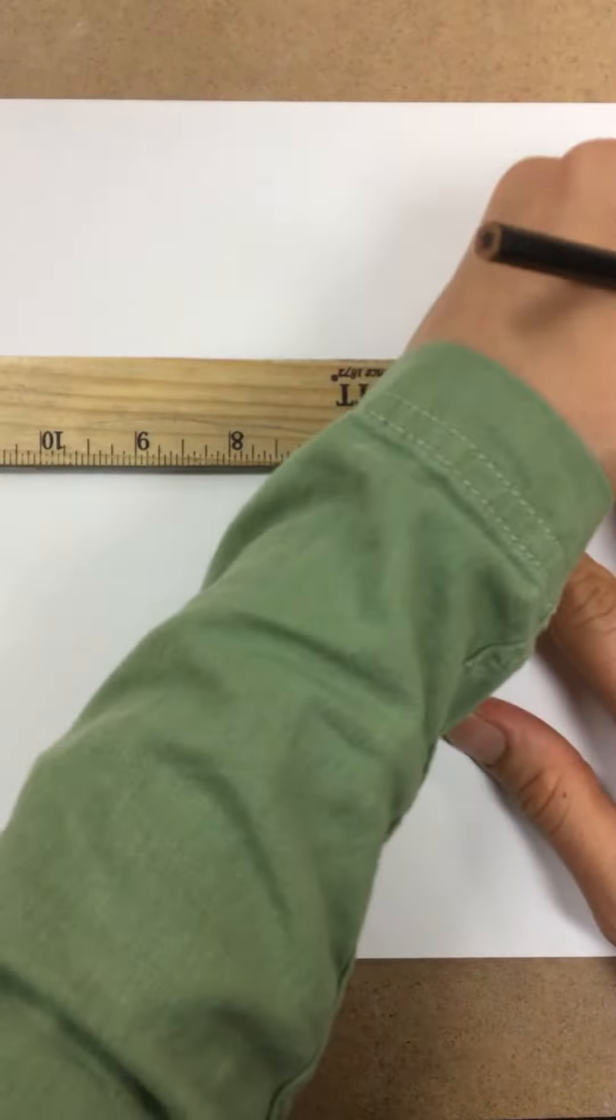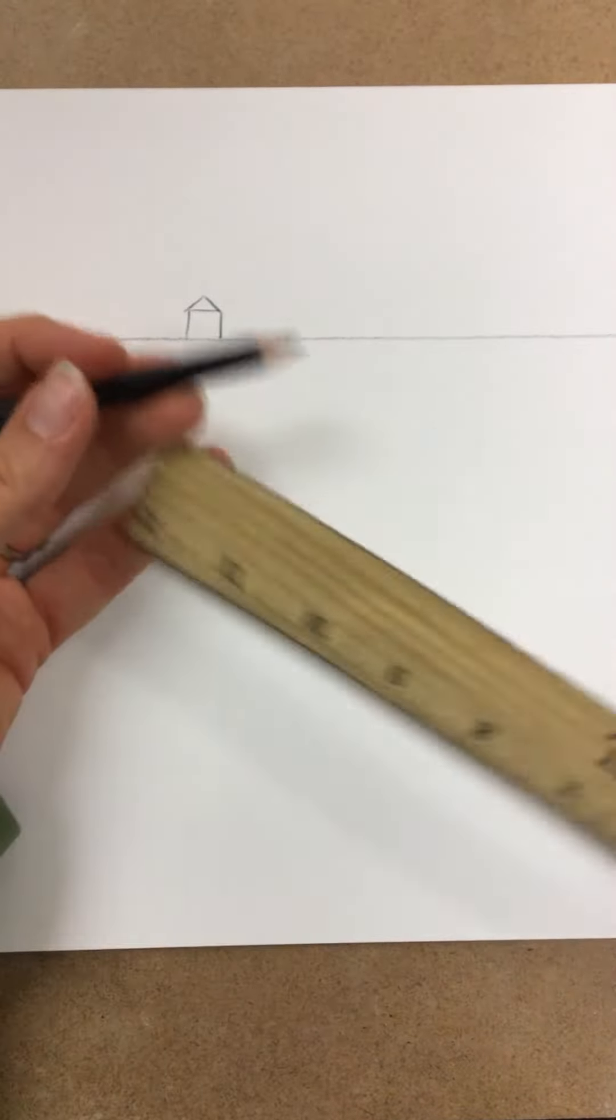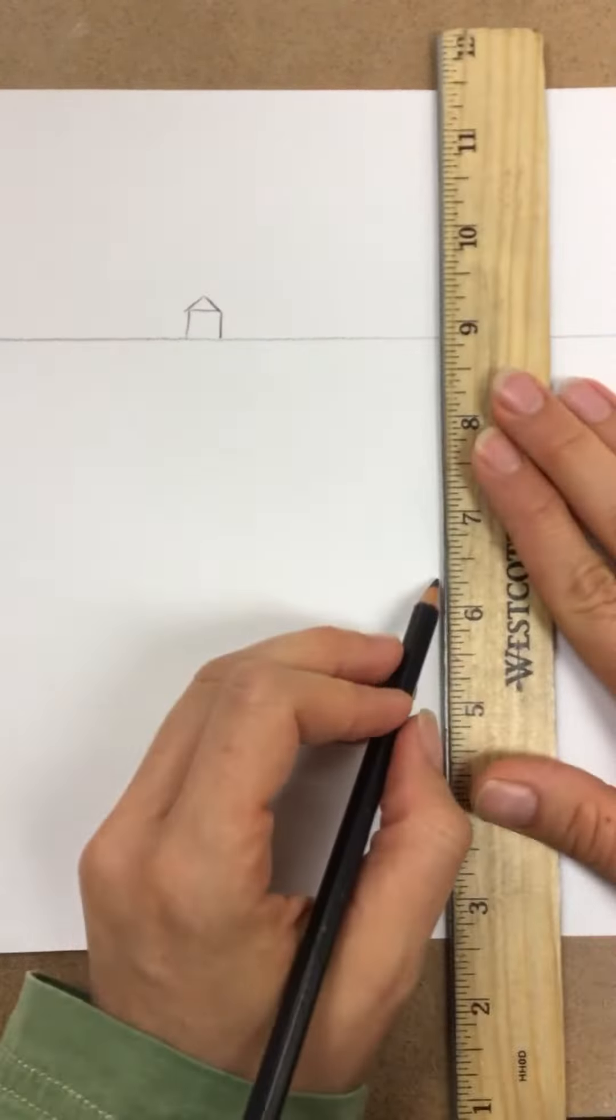I'm going to start with a good old horizon line here. And just based on the location of my objects, this is going to appear much further away than this.